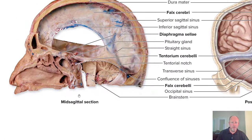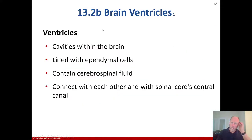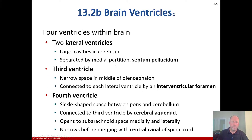The ventricles of the brain are cavities lined with ependymal cells — a glial cell type — and they contain cerebrospinal fluid. They connect with each other and with the spinal cord's central canal. There are four ventricles: the two lateral ventricles are large cavities in the cerebrum separated by the septum pellucidum; the third ventricle is a narrow space in the middle of the diencephalon connected to each lateral ventricle by an interventricular foramen; and the fourth ventricle is a sickle-shaped space between the pons and cerebellum, connected to the third ventricle by the cerebral aqueduct, opening to the subarachnoid space medially and laterally, and narrowing before merging with the central canal of the spinal cord.